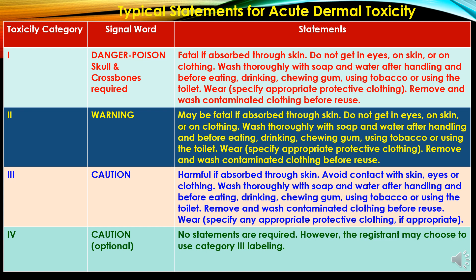Now typical statements for acute dermal toxicity. In toxicity category 1, the signal word is 'Danger/Poison,' a skull and crossbones is required, and the statement is: fatal if absorbed through skin; do not get in eyes or on skin or clothing; wash thoroughly with soap and water after handling. In category 2, the signal word is 'Warning,' and the statement is: may be fatal if absorbed through skin; do not touch eyes or skin or clothing; wash thoroughly with soap and water. In category 3, the signal word is 'Caution,' and the statement is: harmful if absorbed through skin. In category 4, the signal word is 'Caution,' and no statements are required, though the registrant may choose category 3 labelling.